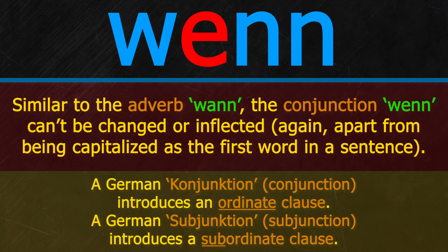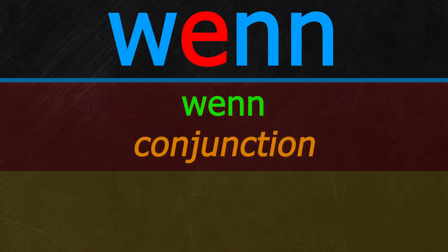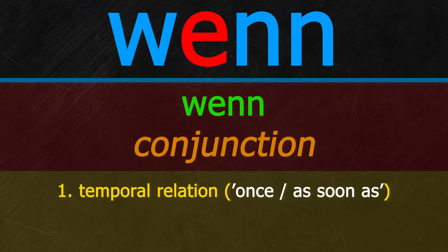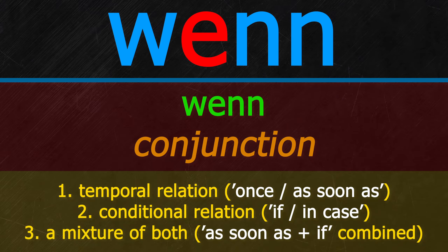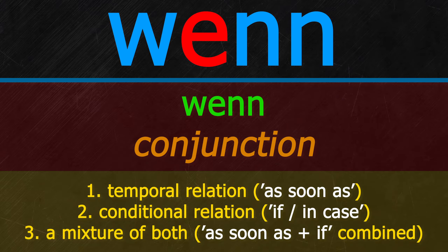What makes WENN special and standing out in comparison to WANN is that it's semantically way more flexible. WENN can express several different semantic relations: one, a temporal relation — slightly similar to WANN, yet unspecific and more general; two, a conditional relation — if or in case this happens, that's gonna result in something; and three, pretty much a mixture of both, which usually gets used in a temporal way — as soon as this happens, if it's ever gonna happen in the first place.